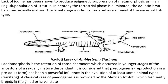The lack of iodine has been shown to produce epigenetic suppression of metamorphosis, as in an English population of Triturus. In Neoteny, the terrestrial phase is eliminated and the aquatic larva becomes sexually mature.